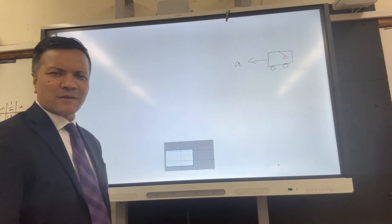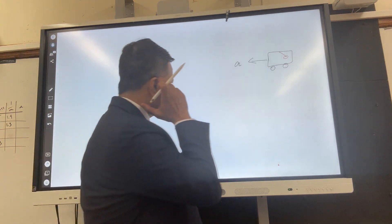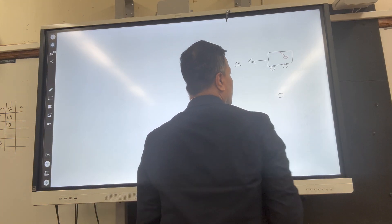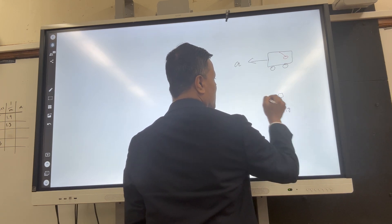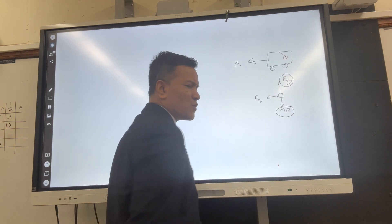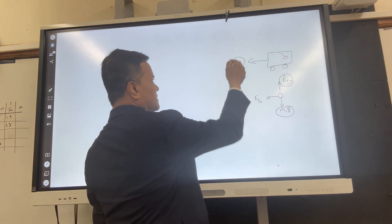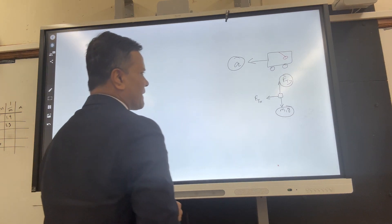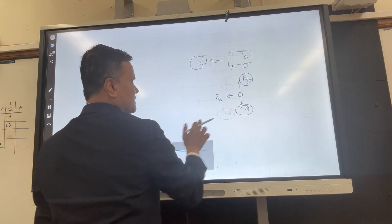Now we want to find the acceleration of the truck using a rope with a bob hanging from the truck ceiling. First, we draw the free body diagram. The bob has three forces acting on it: m₁g (gravity downward), Ftx (horizontal component of tension), and Fty (vertical component of tension). Fty cancels with m₁g, but Ftx doesn't cancel with anything — it's the net force in the direction of acceleration. We'll use F = ma to find the acceleration.